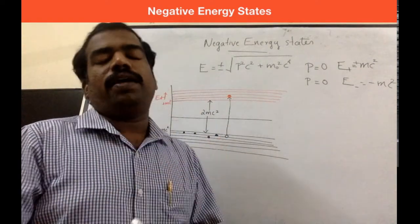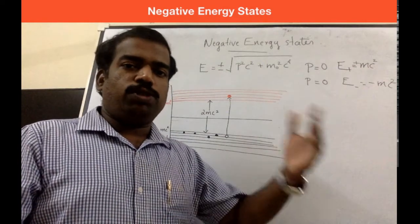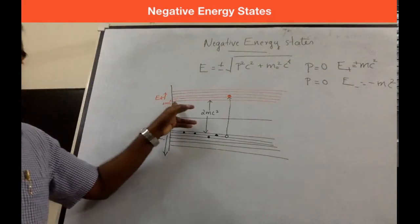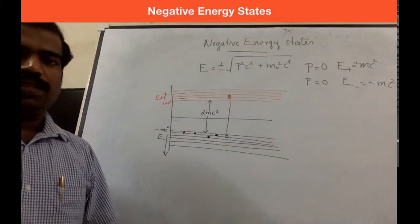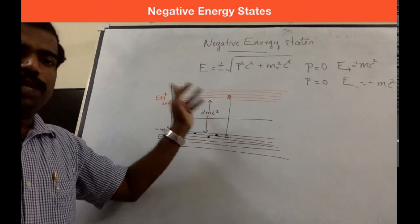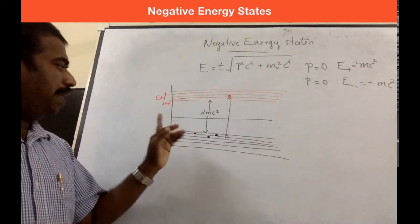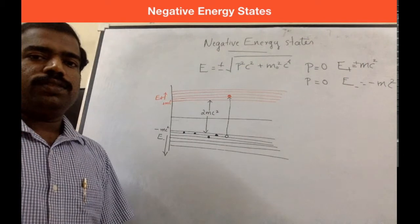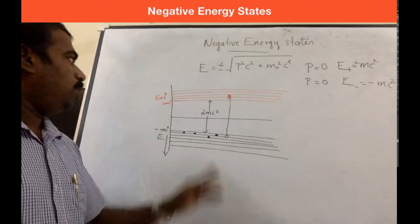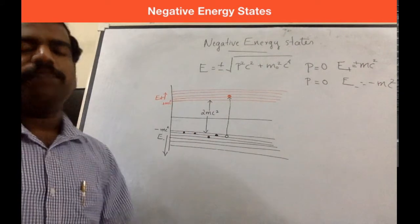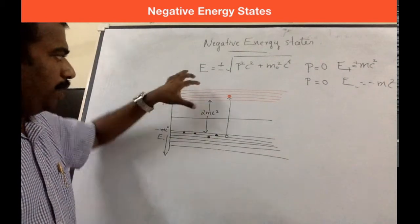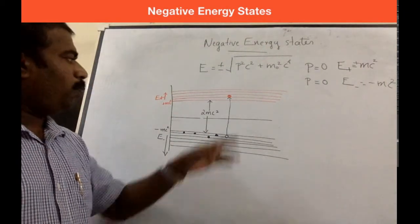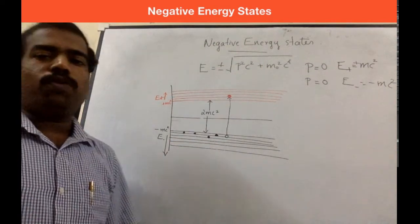The positive branch starts with plus mc squared and extends to infinity as p becomes infinity. The negative energy branch starts with minus mc squared and extends to minus infinity. Between these two branches there is a gap separated by an energy value of 2mc squared — a forbidden gap of width 2mc squared.